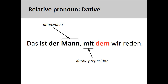We can also have a relative pronoun as the object of a dative preposition, as you see here on the screen. In this sentence, "das ist der Mann, mit dem wir reden" (that is the man with whom we talk), the dative preposition is placed before the relative pronoun.